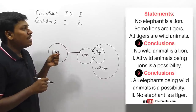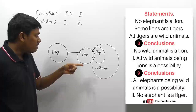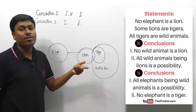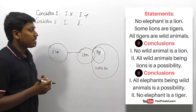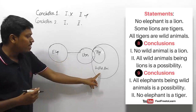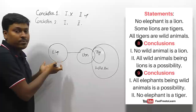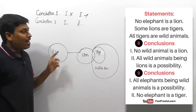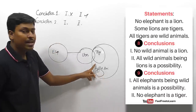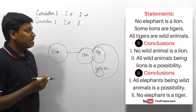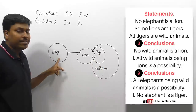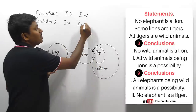First set, conclusion two: 'all wild animals being lion is a possibility' — both parameters are inside a single Venn diagram, so possibility follows. Second set, conclusion one: 'all elephants being wild animal is a possibility' — there is a possible connection between wild animal and elephant, so this is exactly possible. If I draw elephants here, all elephants being wild animal is possible — conclusion one follows. Conclusion two: 'no elephant is a tiger' — there is a possible connection between tiger and elephant, so 'no elephant is tiger' does not follow.